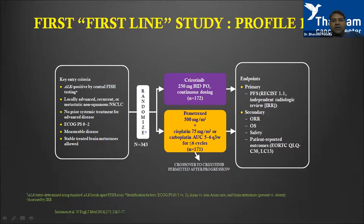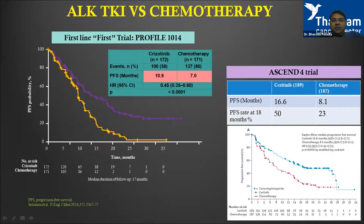The first first-line study is PROFILE 1014 — the crizotinib study — where it was compared with standard of care: pemetrexed and platinum, with PFS as the primary endpoint. The trial was positive, and it established crizotinib as a first-line therapy in ALK-positive NSCLC patients. The PFS improvement was almost four months: chemotherapy at seven months versus crizotinib at eleven months.